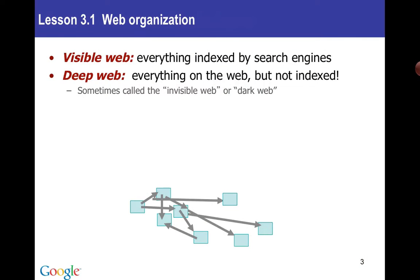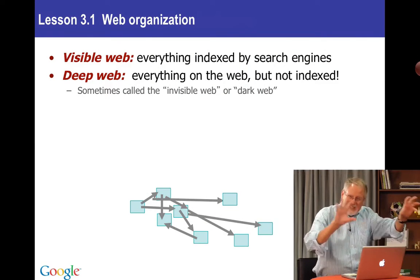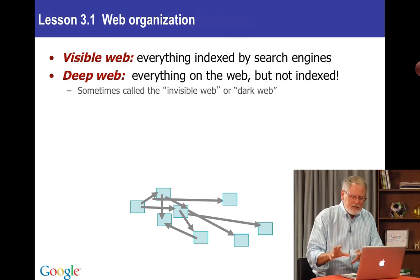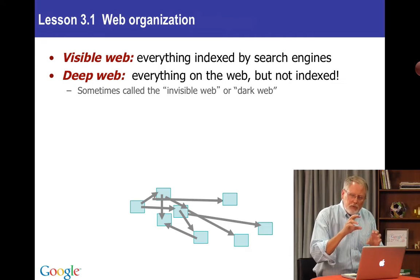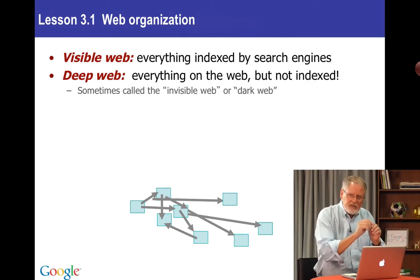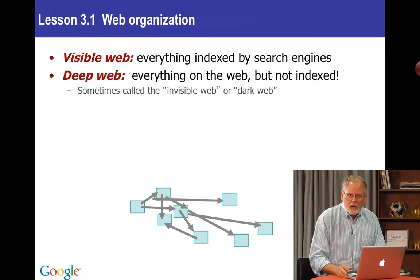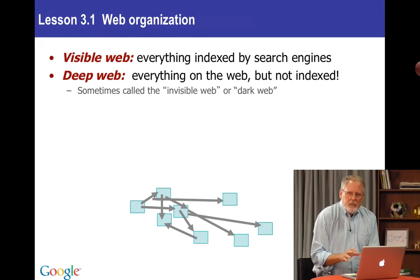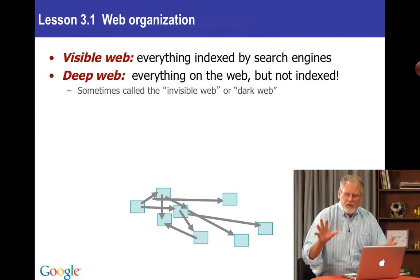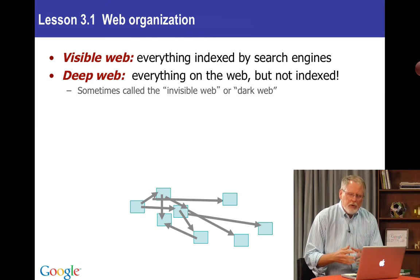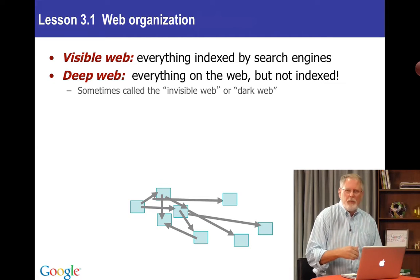I want to start off by telling you how the web is organized. The web is kind of a big messy place and it's fundamentally, as you can see here in this diagram, a set of blue pages. Each one of those blue rectangles is a page and there's a link. When you click on a blue link it's actually taking you from one page to another page. Now the stuff that Google can crawl is what we call the visible web. This is all the stuff that's easily findable through search, and stuff that's not findable or not represented in Google's index is called the deep web or sometimes called the dark web — that's the stuff we can't find.